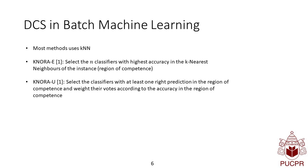This method, the authors propose to select the N classifiers with highest accuracy in the k-nearest neighbors of the instance that you want to classify. This is known as the region of competence.